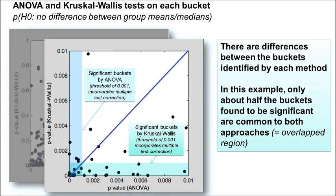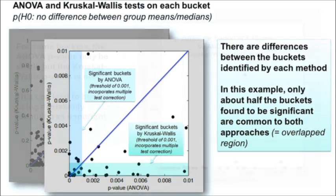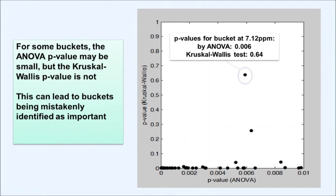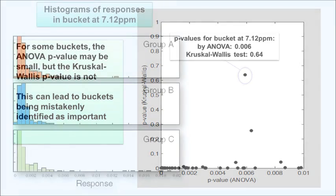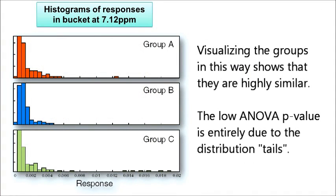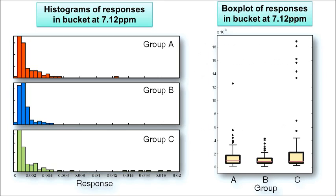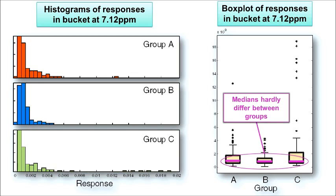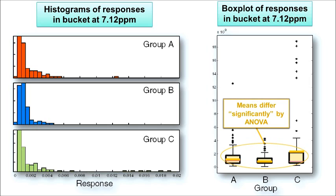For some metabolites, whereas the ANOVA p-value may be very small, the Kruskal-Wallis p-value is not. One such bucket is at 7.12 ppm. The histograms show the distribution of the data in each of the groups. The boxplots summarise this data in an alternative way. The medians marked by the purple lines are almost equal, and the Kruskal-Wallis test concludes that the groups do not differ significantly. In contrast, the means marked by the orange lines are pulled away from the medians by the skewness of the data. ANOVA is not an appropriate statistical test in this case.